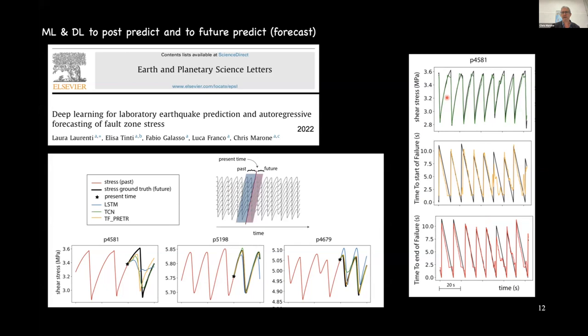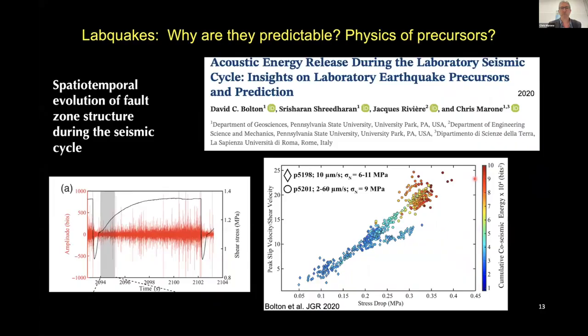This also shows for a couple of different types of experiments the relationship between the data and the machine learning-based models. So this is the shear stress, this is the time of failure, this is the time to the end of failure. Predicting the time of failure is useful, but if you can also predict when the failure is going to end, it means you can predict the length of the event and the magnitude of slip that's going to occur.